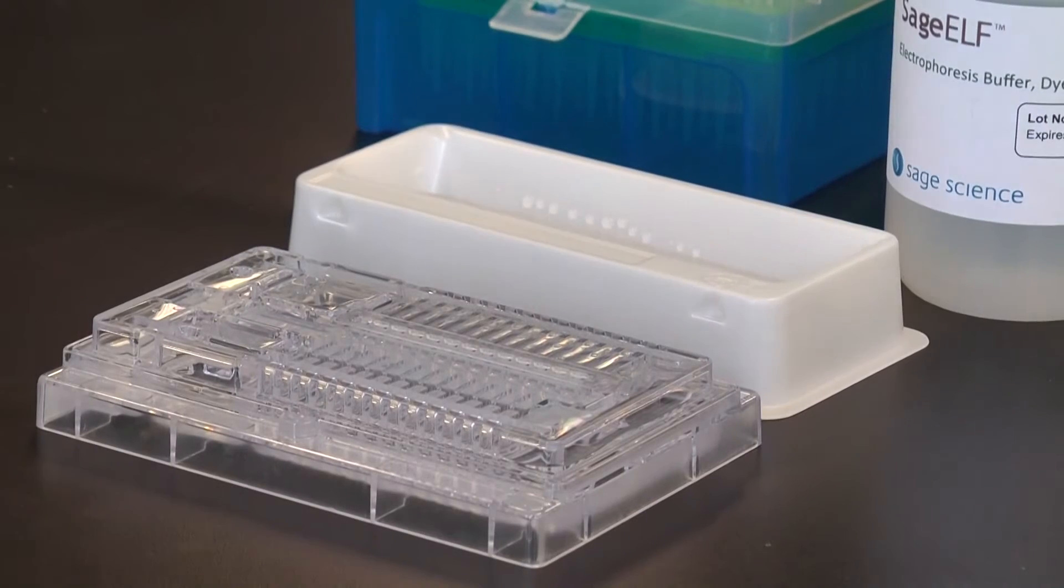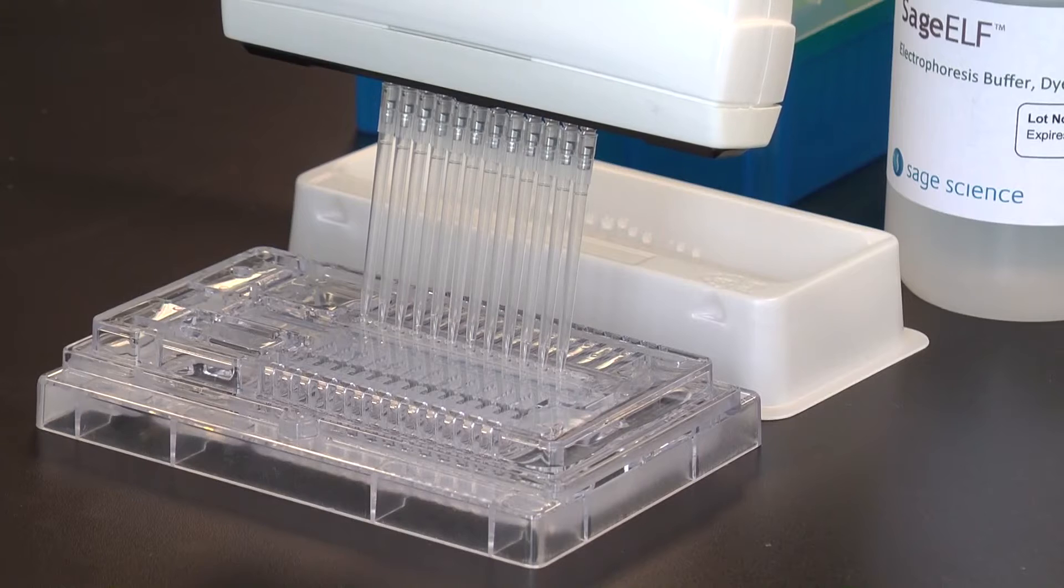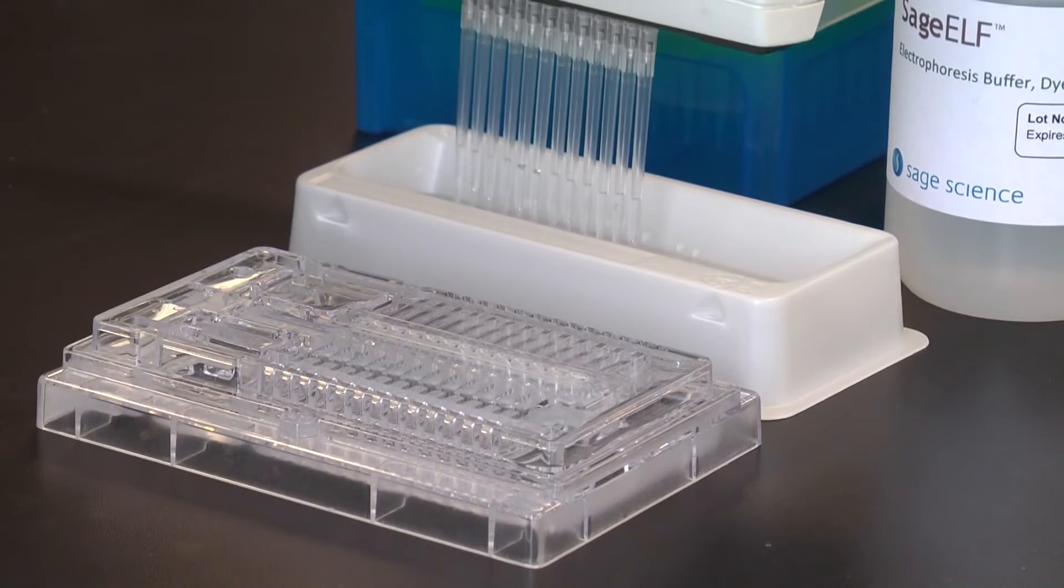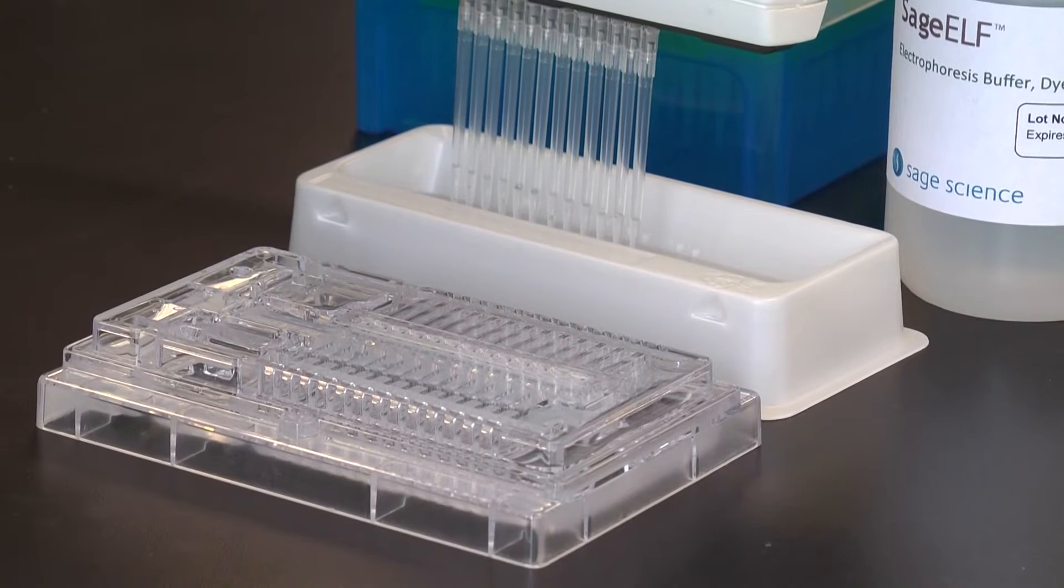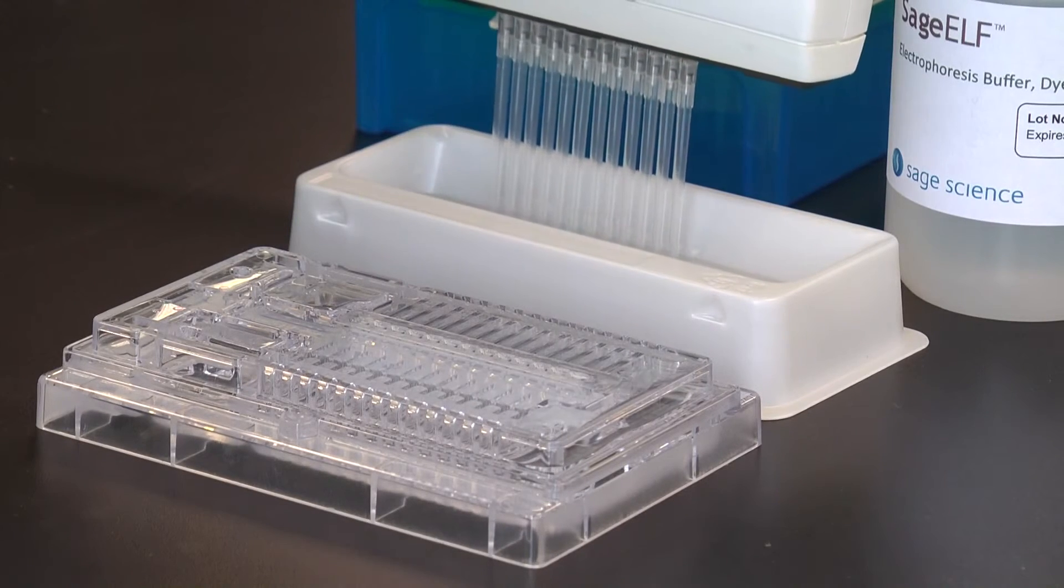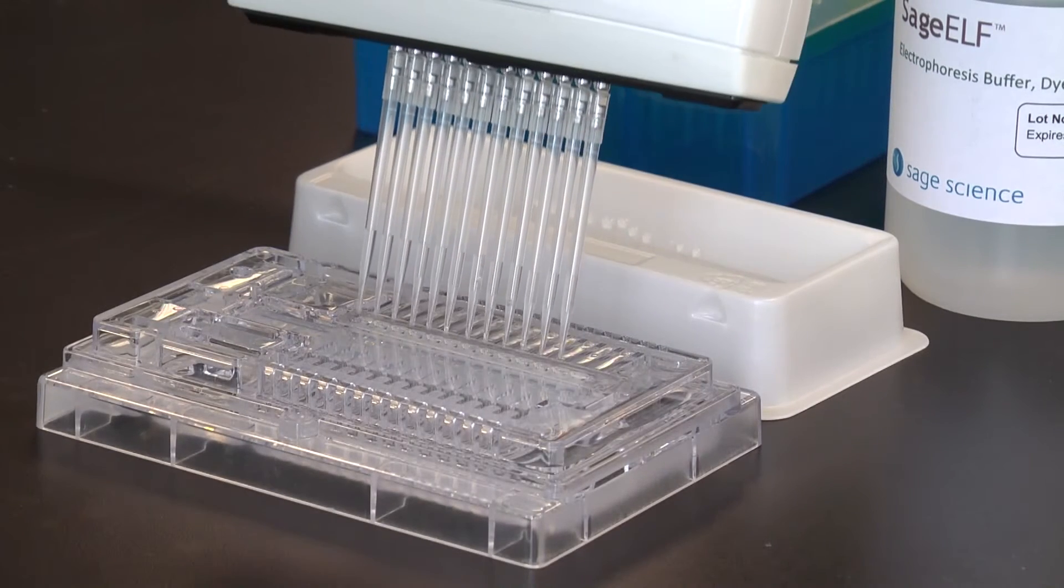Remove buffer from all thirteen elution wells. Set pipetter to 40 microliters to completely empty the wells. Keep the pipette tip vertical in the well to avoid damage to the membranes. Add 30 microliters of fresh buffer to all thirteen elution wells. Take care not to introduce additional bubbles into the elution modules.